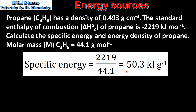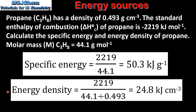This gives us a specific energy of 50.3 kJ per gram. Next we will calculate the energy density. The energy density is equal to the energy released by the fuel, which is the same as the enthalpy change of combustion value, divided by the volume of the fuel. To calculate the volume of fuel, divide its molar mass by its density. This gives us an energy density of 24.8 kJ per cm³.